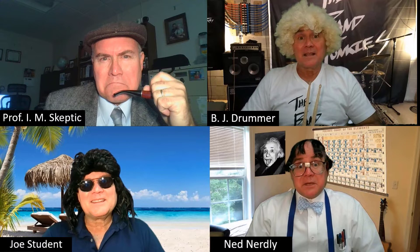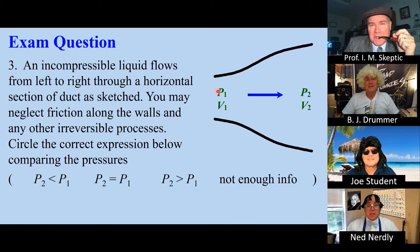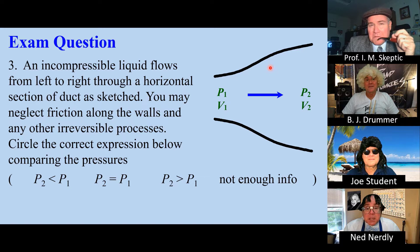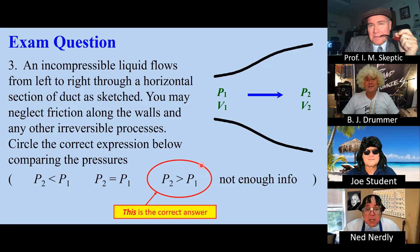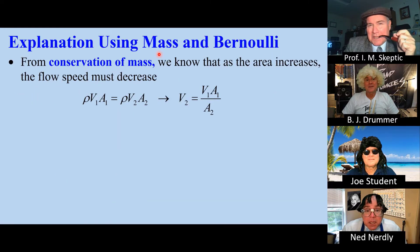Yeah, I did the same thing. Me too. Can you explain it, please? I'll share my screen. Here's question three. We have an incompressible liquid flowing through a section of diverging duct. We're neglecting friction and other irreversibilities. This is obviously the correct answer — the pressure goes up. I'll explain it using mass and Bernoulli.